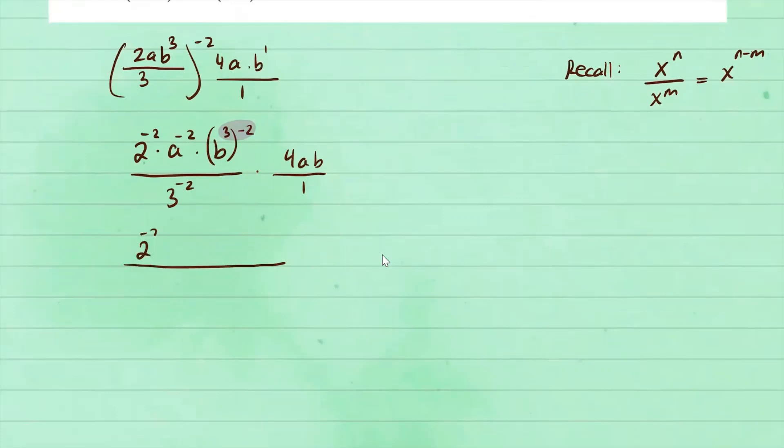You have 2 to the negative 2, a to the negative 2, b to the negative 6. We multiply the exponent 4ab all over 3 to the negative 2.